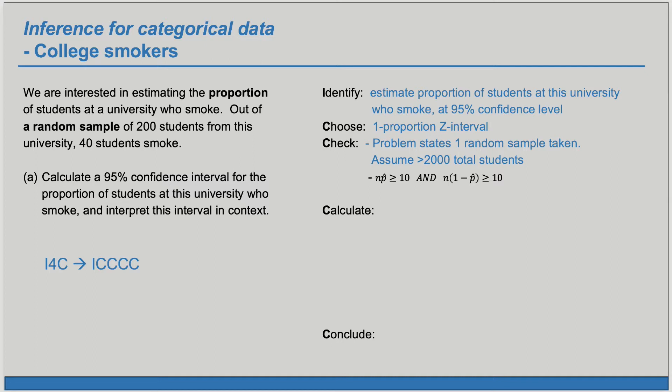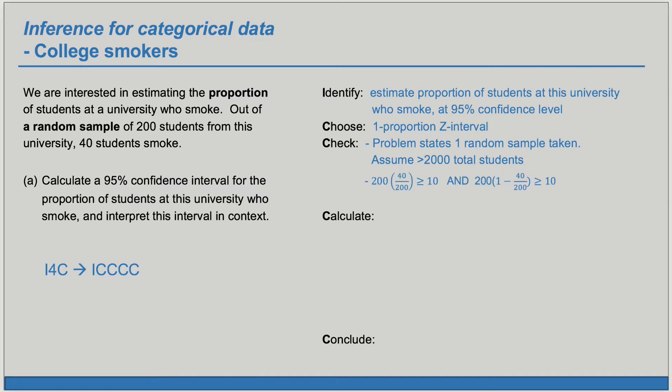Here n the sample size is 200, p-hat the sample proportion is 40 over 200. So we can plug those in and we see that both of these are greater than or equal to 10.